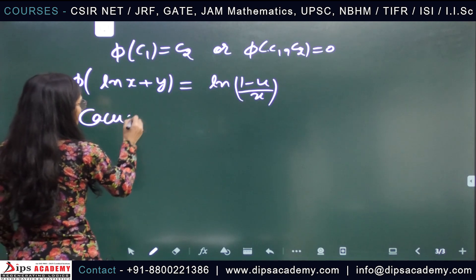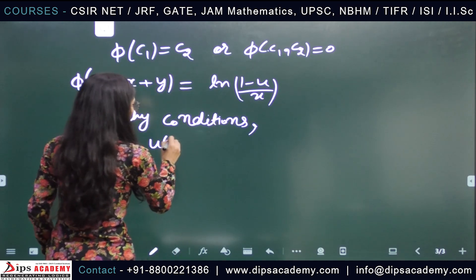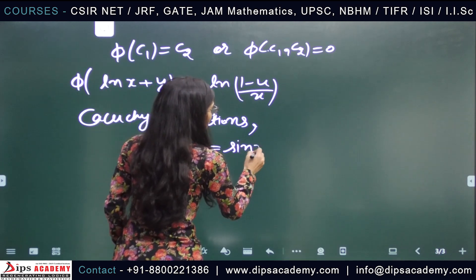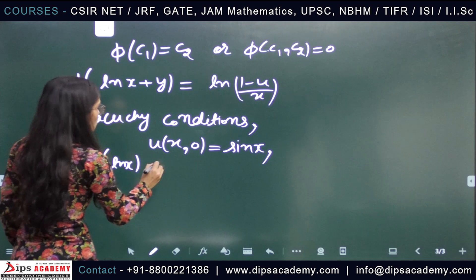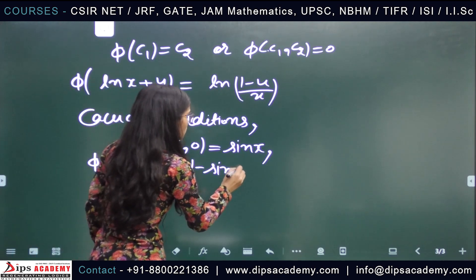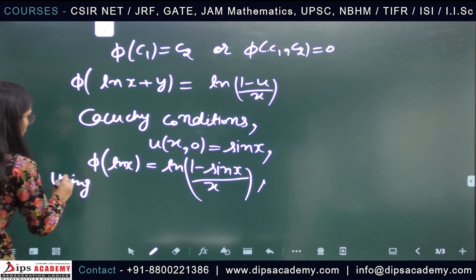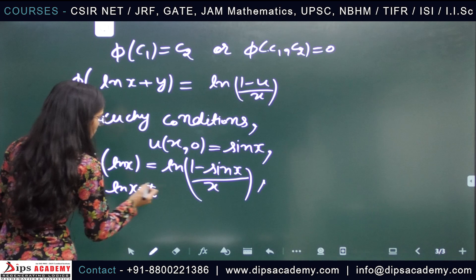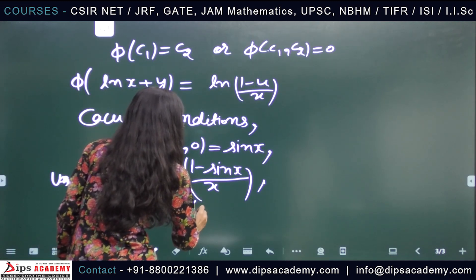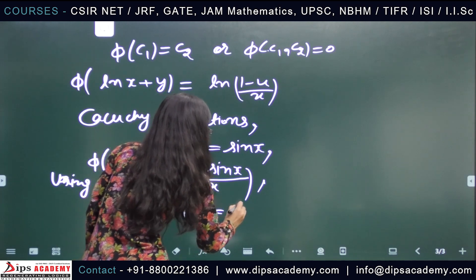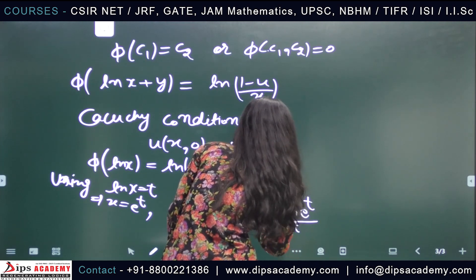The Cauchy condition is u(x, 0) = sin x. Substituting into the general integral equation, we get φ(ln x) = ln((1 − sin x)/x). Using the substitution ln x = t, which implies x = eᵗ, the equation becomes φ(t) = ln((1 − sin(eᵗ))/eᵗ).